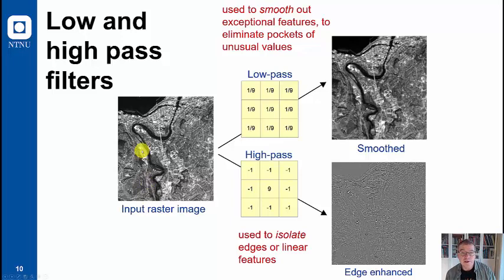Filtering is very common within remote sensing. If you have an input raster image, this is an old SPOT image of Trondheim, to illustrate how a low pass and a high pass filter would smooth or enhance the input image. A low pass filter typically takes out exceptional features, high values, pockets of unusual value and generates a much smoother image.